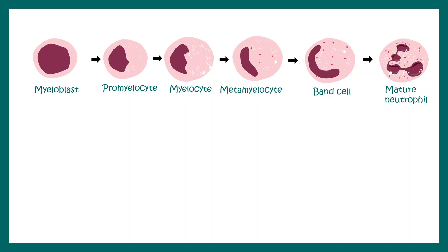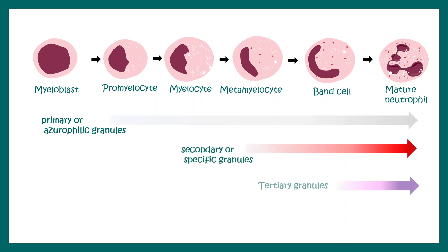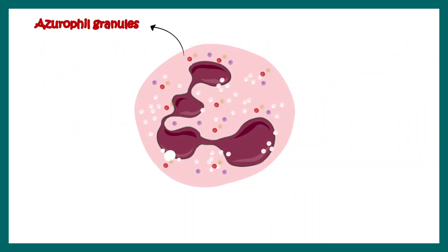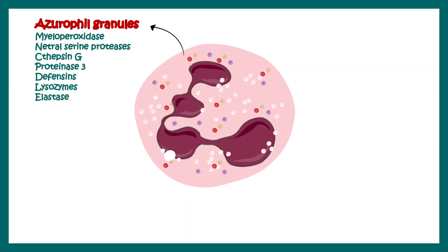One key difference between these transitional cellular states is the presence of granules. Primary or azurophilic granules are common in many stages of neutrophil development. Neutrophils have azurophilic granules, also known as primary granules, which contain myeloperoxidase, natural serine proteases, cathepsin G, proteinase 3, and many other enzymes including lysozymes.